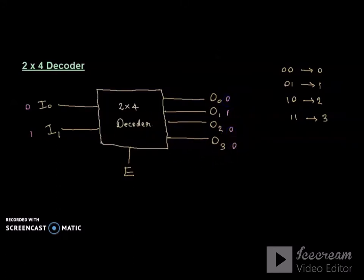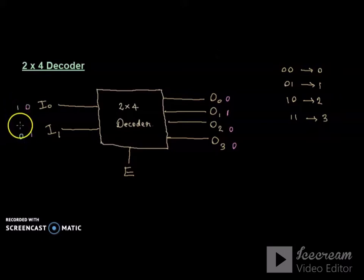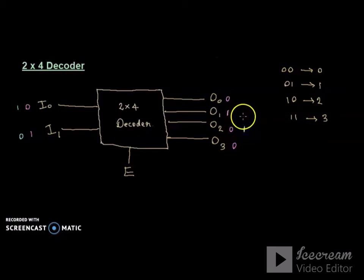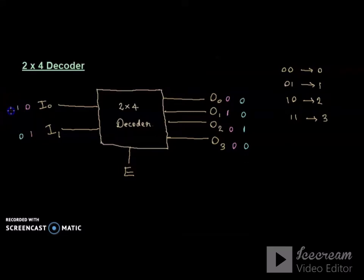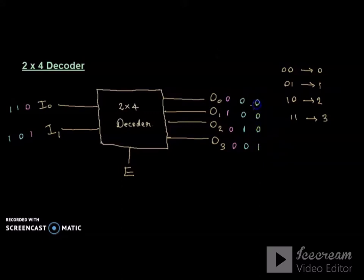Continuing: when i0 is 1 and i1 is 0, that corresponds to decimal 2, so o2 is enabled. In the same way, if i0 is 1 and i1 is 1, then o3 will be enabled and all other outputs are 0.